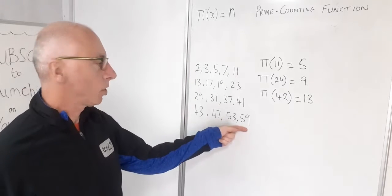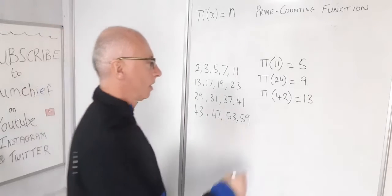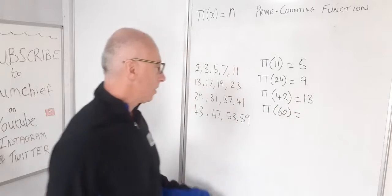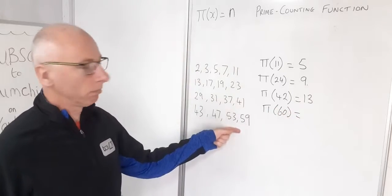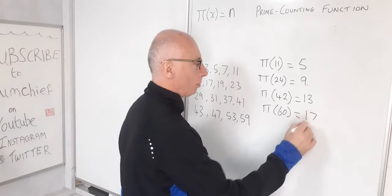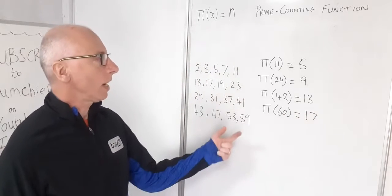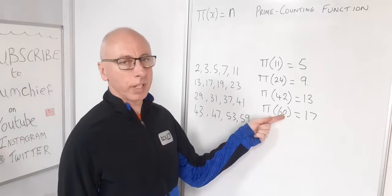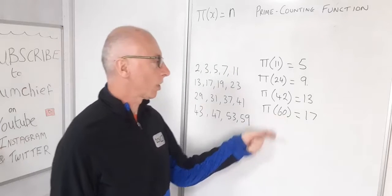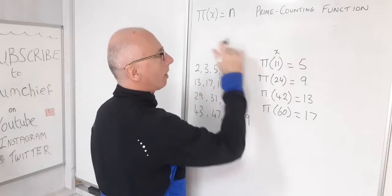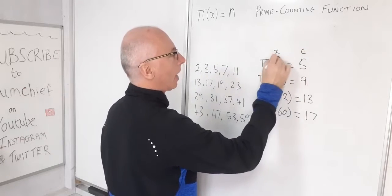The same here if I put some number, let's say 60, π(60). That's going to give me 17 because there's 17 prime numbers up to and including 60. So that's how the value of the input of the π function works. This would be our x's and this would be our n's.